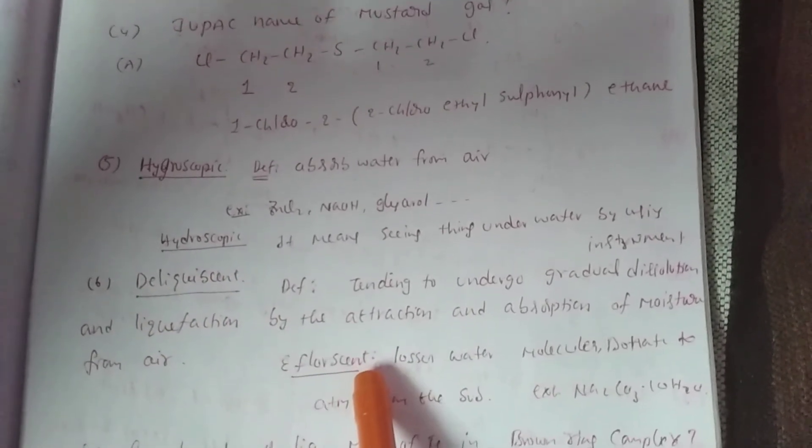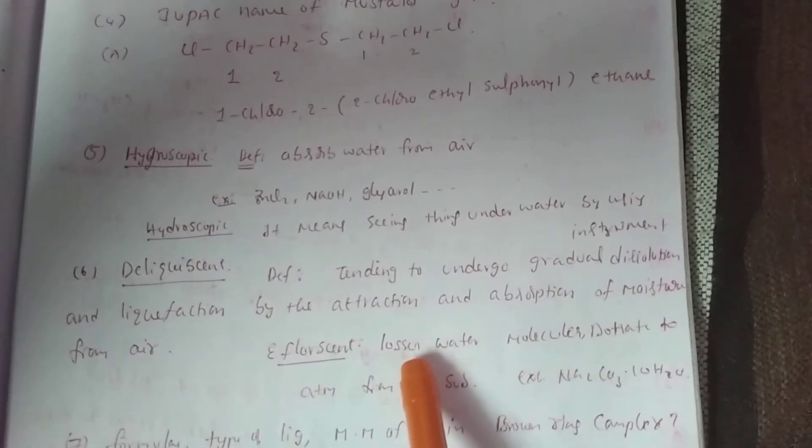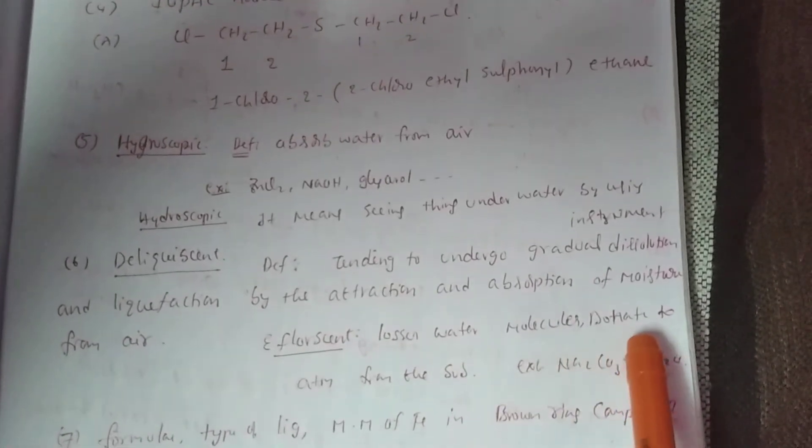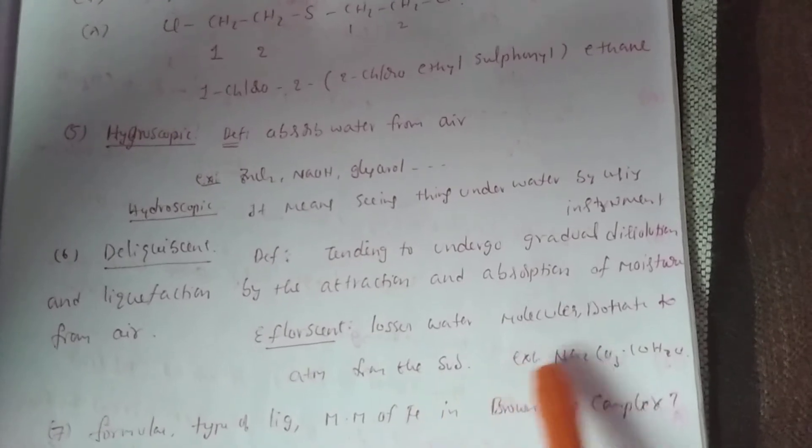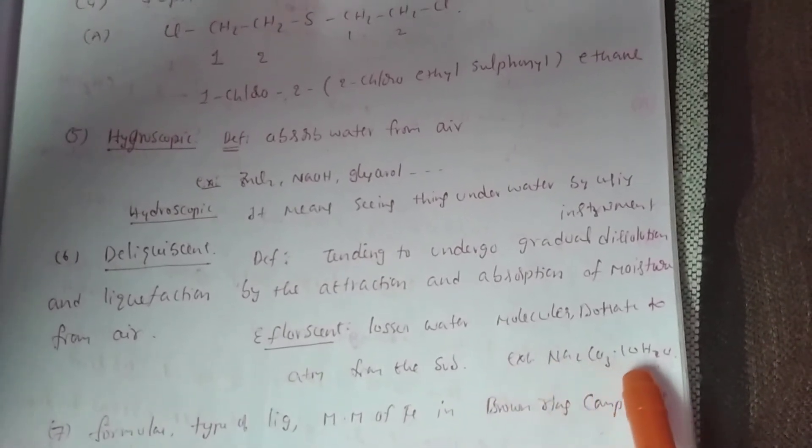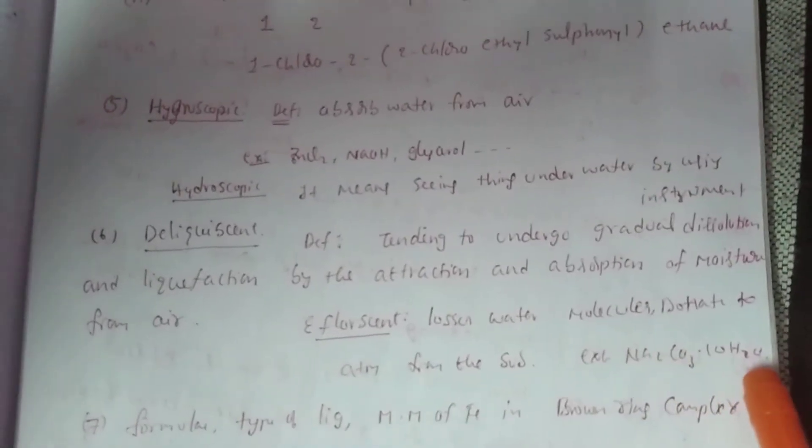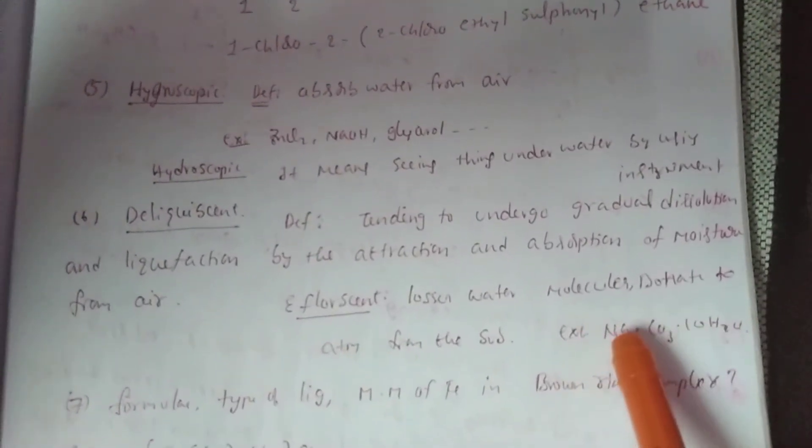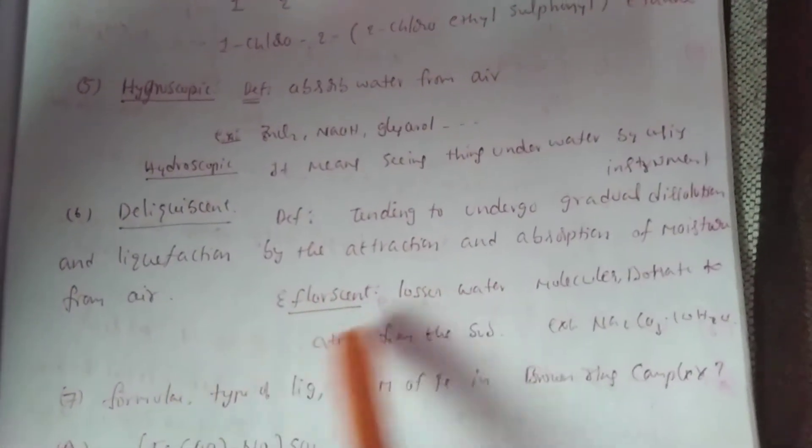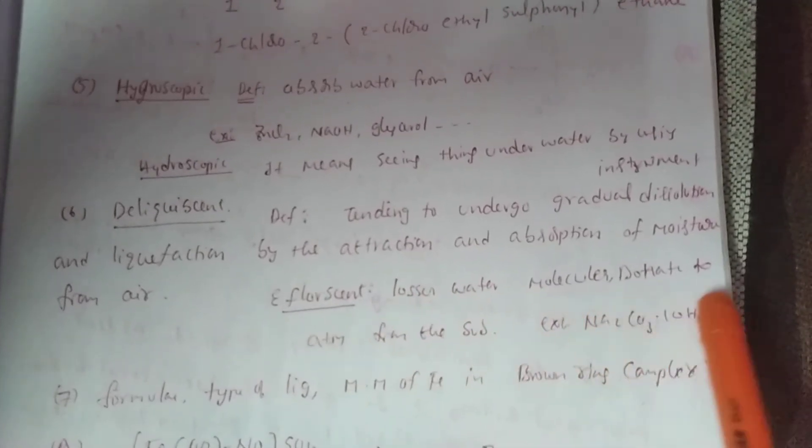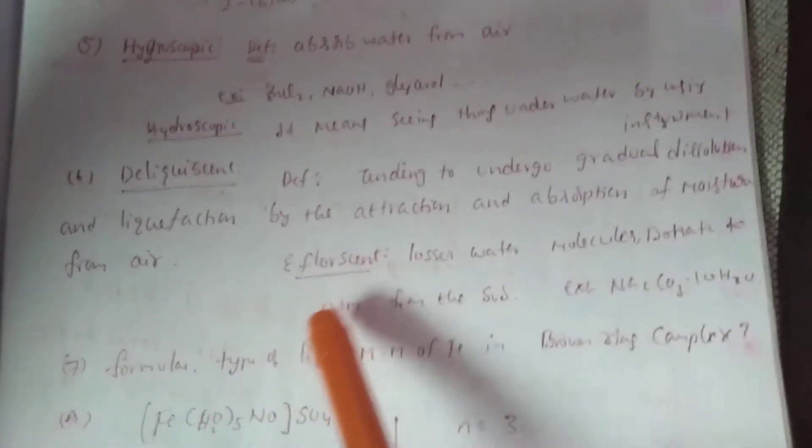Efflorescent meaning: losses water molecules, donates to atmosphere from the substance. For example, Na2CO3·10H2O, known as washing soda, donates H2O molecules. So it has efflorescent nature. Losses water molecules, donates to atmosphere. It is known as efflorescent.